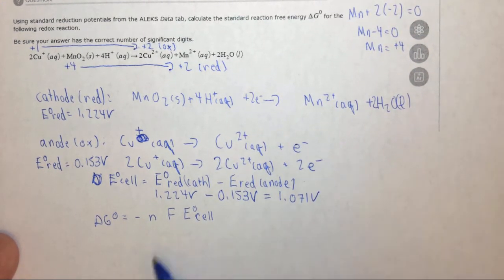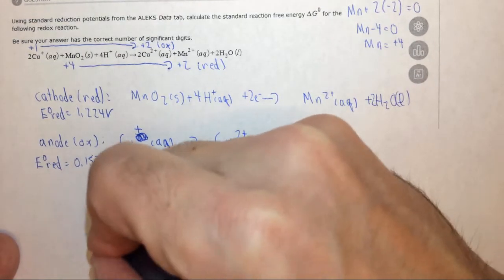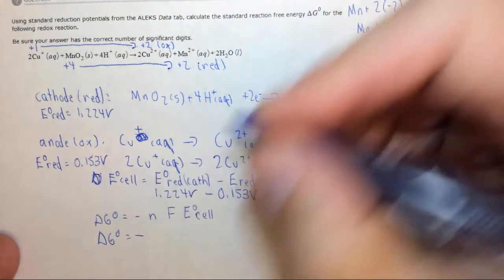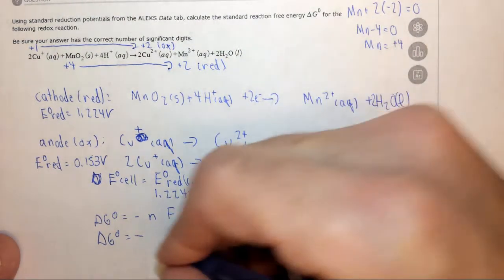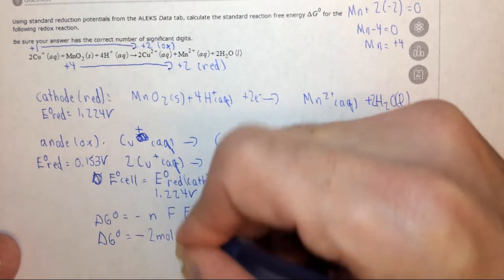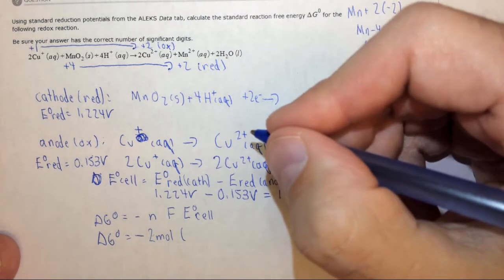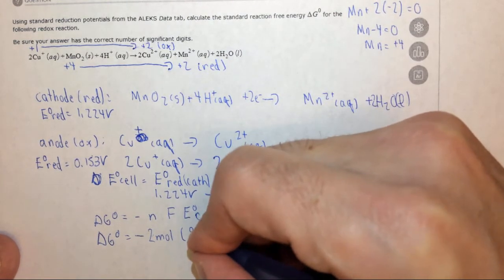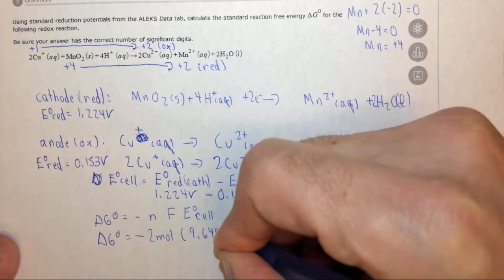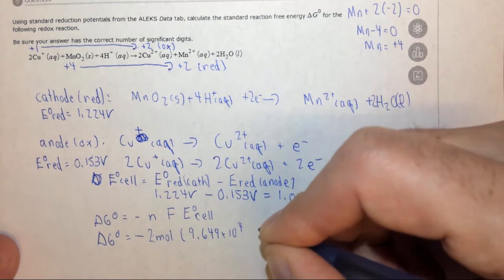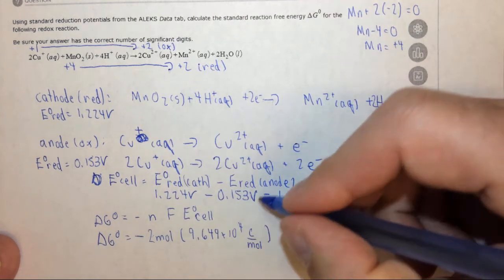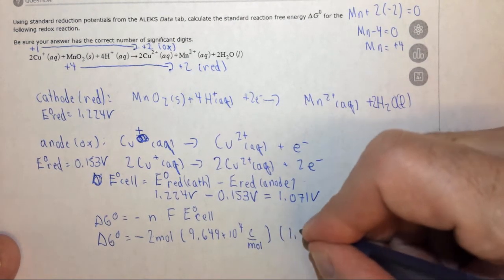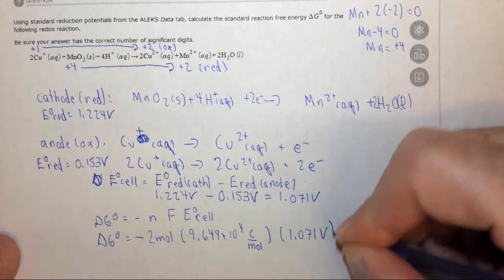We can now plug all this stuff in. Delta G equals minus n, n is two moles of electrons have been transferred, so two moles, times Faraday's constant, which is 9.649 times 10 to the 4 coulombs per mole, times the standard reduction potential, which we just found, which is 1.071 volts.